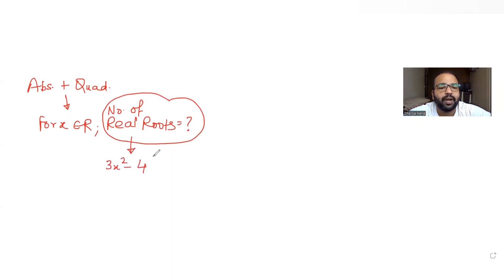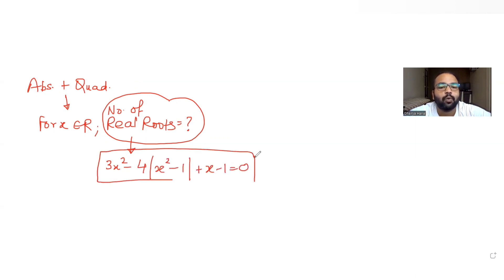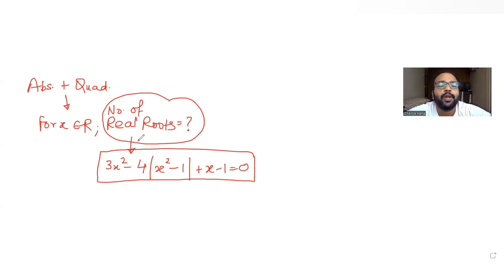The equation given to us is 3x² - 4|x² - 1| + x - 1 = 0. Now let's understand how many real roots will be present for this equation.